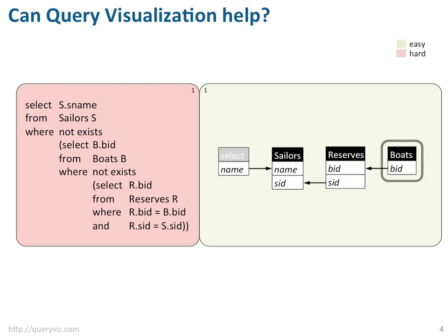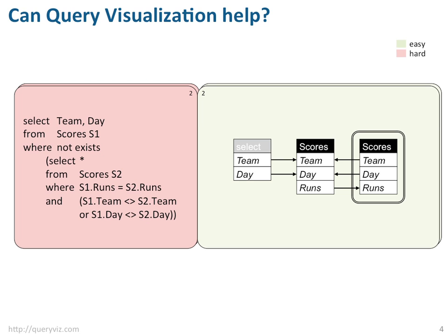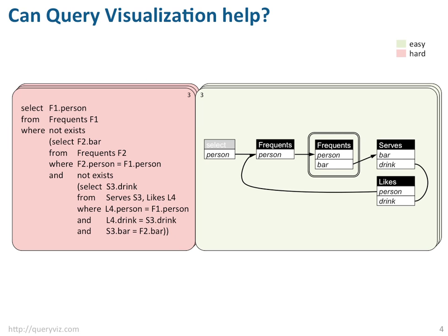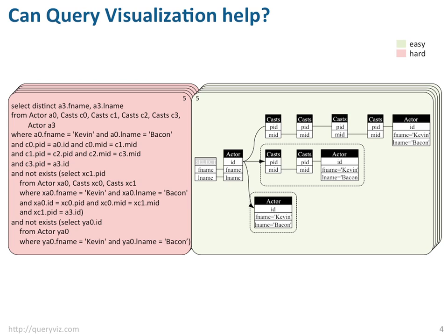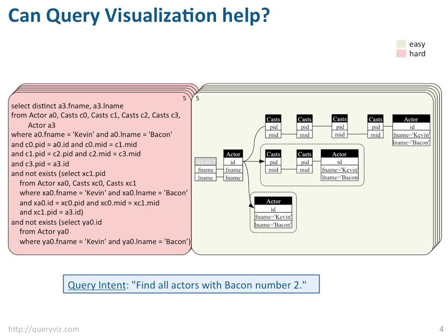That's why software developers often have a preference to start from scratch instead of taking the time to understand existing code written by somebody else. We repeat the exercise, but now in addition to the SQL query on the left, we add on the right an appropriate visual representation of the query. And again, while we browse, we want to quickly understand the intent of each query. Are we now better able to perceive certain SQL patterns? Let's take query number 5. This query asks for all actors in the IMDB movie database with Bacon number 2.